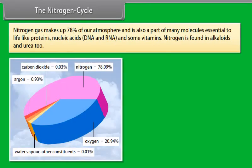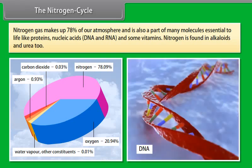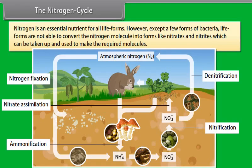The Nitrogen Cycle. Nitrogen gas makes up 78% of our atmosphere and Nitrogen is also a part of many molecules essential to life like proteins, nucleic acids, DNA and RNA and some vitamins. Nitrogen is found in alkaloids and urea too. Nitrogen is an essential nutrient for all life forms. However, except a few forms of bacteria, life forms are not able to convert the Nitrogen molecule into forms like Nitrates and Nitrites which can be taken up and used to make the required molecules.